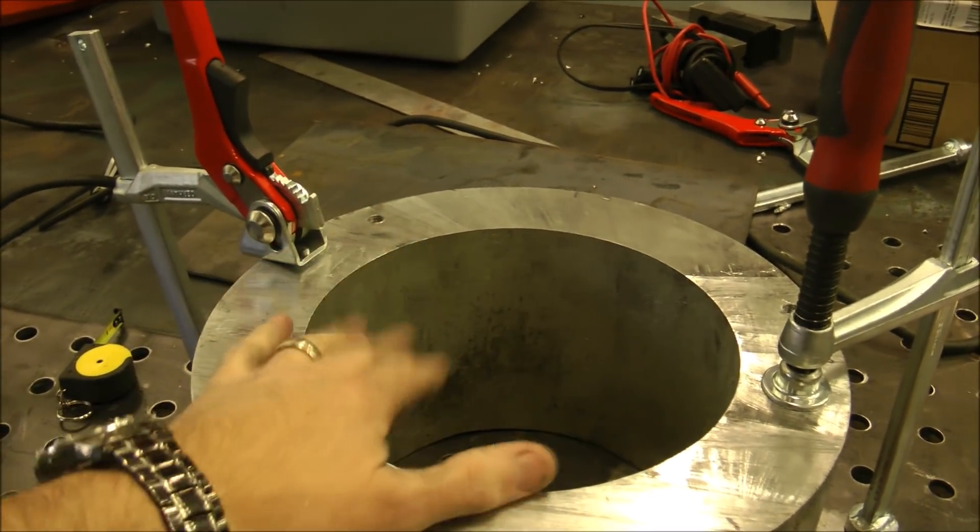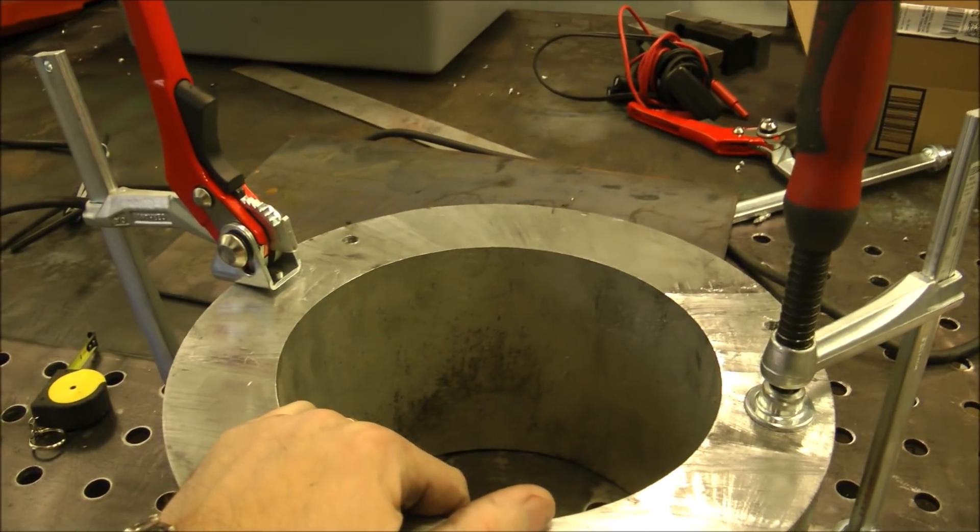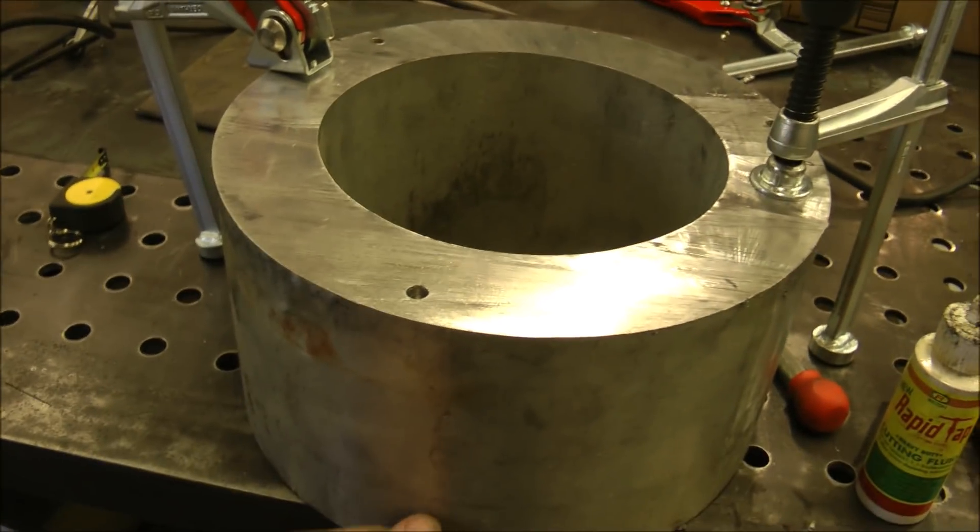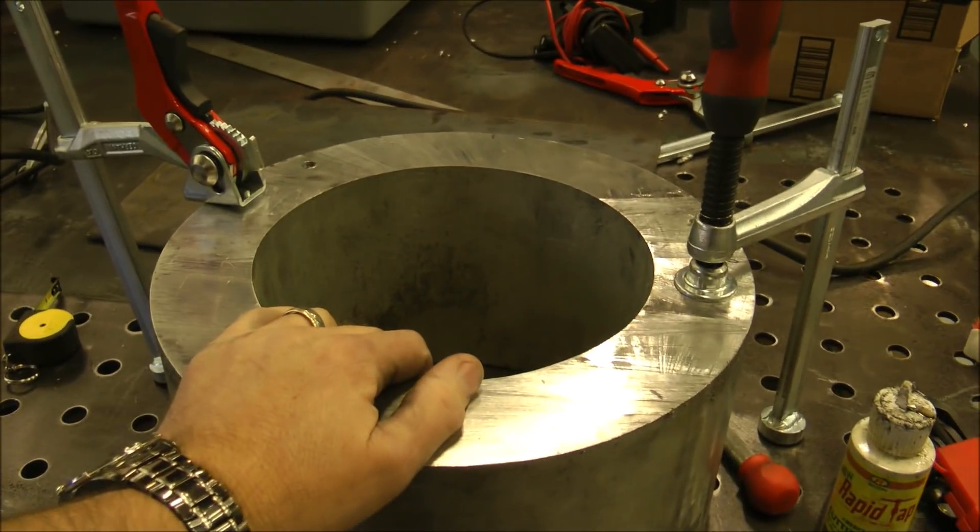We'll then clamp that down and do the same thing to the other side. And then of course mill it down to the exact height that we need for the bell housing.